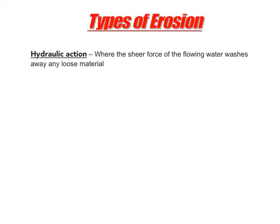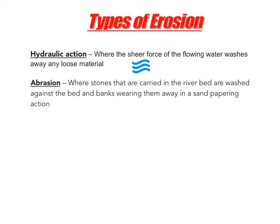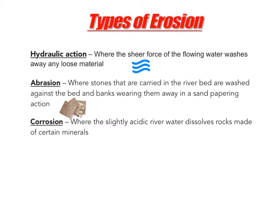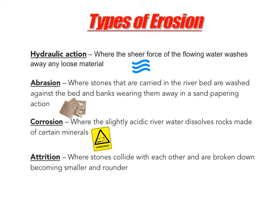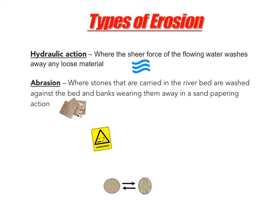Before we go any further, we should recap on the different types of erosion. Firstly, hydraulic action is the type of erosion where the sheer force of the flowing water washes away any loose material. Abrasion is where stones carried within the river channel are washed against the bed and banks, wearing them away in a sandpaper-like action. Corrosion is where the slightly acidic river water dissolves rocks made from certain minerals. Lastly, attrition is where stones collide with each other and are broken down, becoming smaller and rounder. The two main erosional processes in the formation of a waterfall are hydraulic action and abrasion.